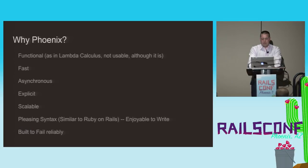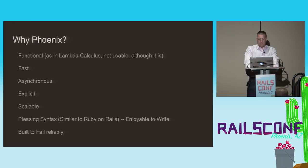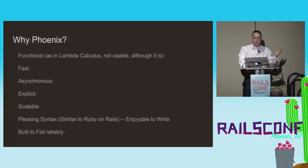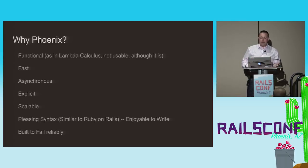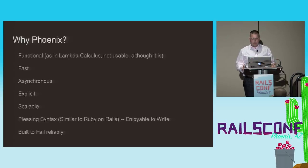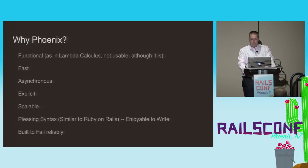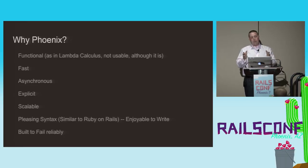Why Phoenix? Because Phoenix is written in Elixir, which is written for the Erlang virtual machine, it's functional, immutable, asynchronous, scalable, lightweight, and fast. A Phoenix app is compiled, which adds certainty around runtime stability, and it's well-suited to the current state of the web, with multi-core processors running multiple processes on a single machine or many machines distributed geographically.